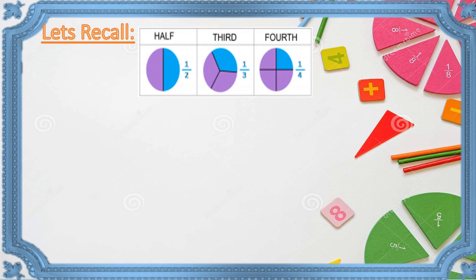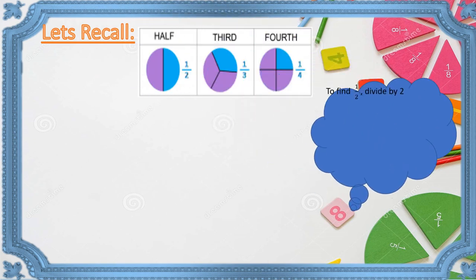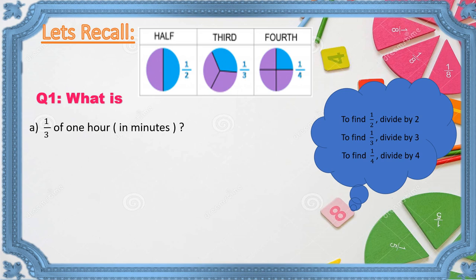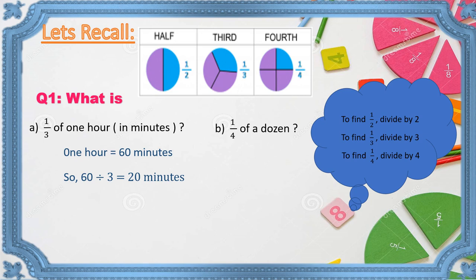Let's recall how to find one half, one third, and one fourth of a number. To find one half, we divide by two; to find one third, we divide by three; to find one fourth, we divide by four. For example, one third of one hour — since one hour equals sixty minutes, sixty divided by three equals twenty minutes. One fourth of a dozen — since one dozen equals twelve, twelve divided by four equals three.